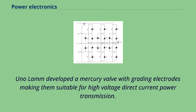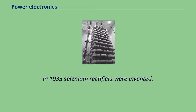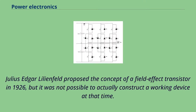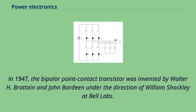A mercury valve with grating electrodes was developed, making them suitable for high-voltage direct current power transmission. In 1933, selenium rectifiers were invented. Julius Edgar Lilienfeld proposed the concept of a field effect transistor in 1926, but it was not possible to construct a working device at that time. In 1947, the bipolar point contact transistor was invented by Walter H. Brattain and John Bardeen under the direction of William Shockley at Bell Labs.